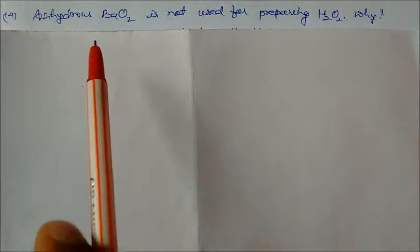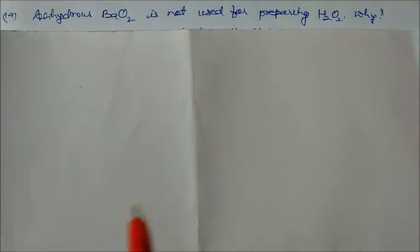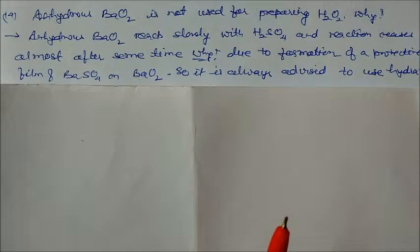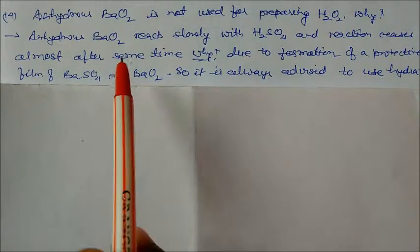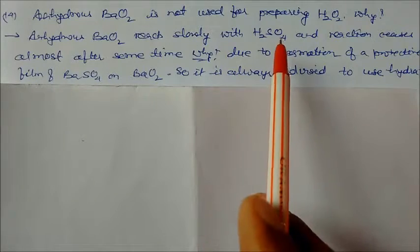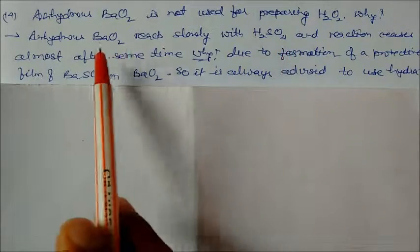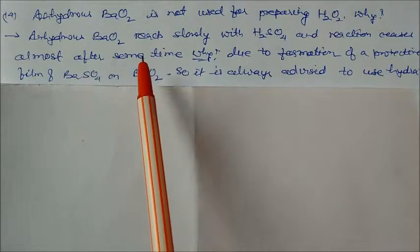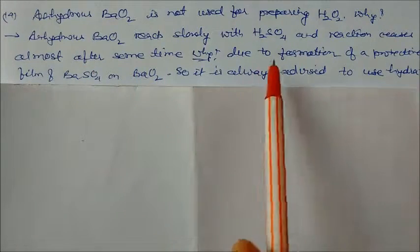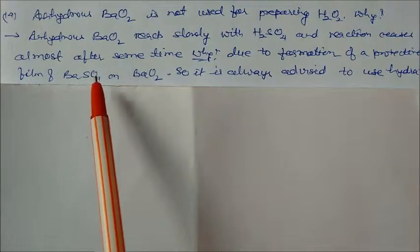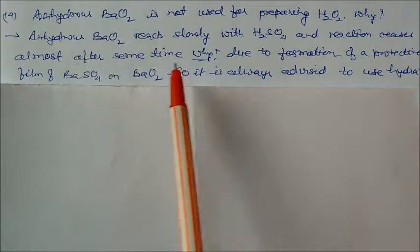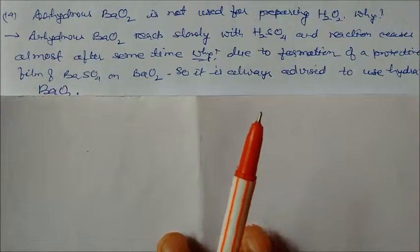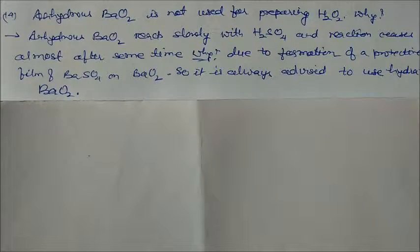Why is anhydrous barium peroxide not used for preparation of H2O2? The reason is anhydrous barium peroxide reacts slowly with sulfuric acid, and the reaction ceases after some time because there is formation of a protective film of barium sulfate on the barium peroxide. So it is always advised to use hydrated barium peroxide.